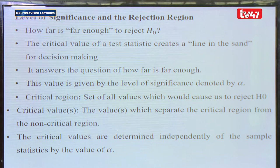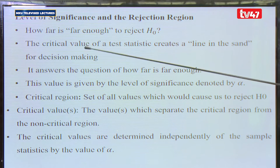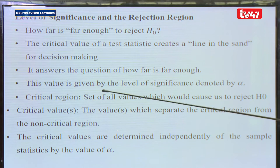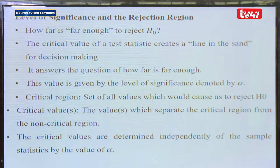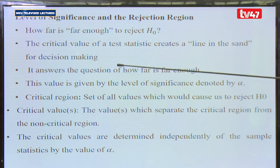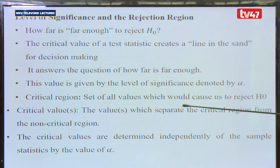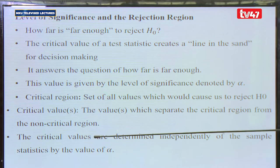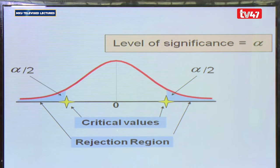Levels of significance and the rejection region: how far is far enough to reject H₀? The critical value of a test statistic creates a dividing line for decision making. This value is given by the level of significance, denoted alpha. The level of significance is not obtained from sample values — it is decided before we even collect the data. The critical region is the set of all values that would cause us to reject H₀, separated from the non-critical region by the critical values.